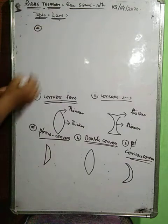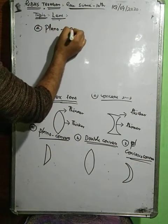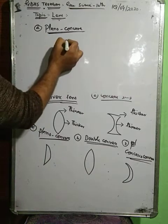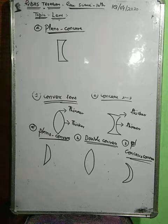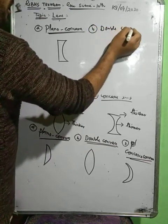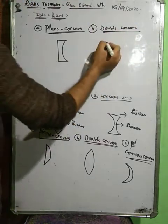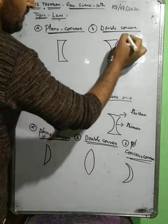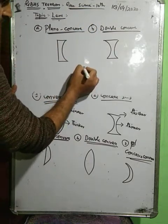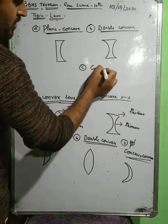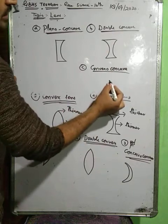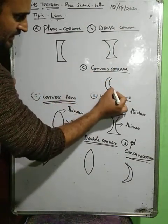Concave lenses are again of three types. First is plano-concave: one surface is plane and the other is concave. Second is double concave: both surfaces are curved and it is thinner in the center and thicker at the edges. Third type is convexo-concave: one side is concave and the other side is convex.